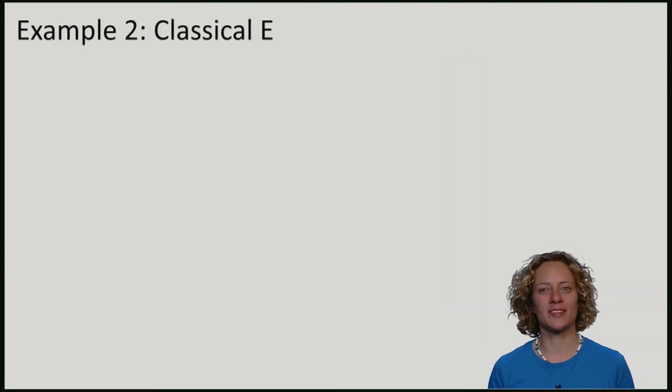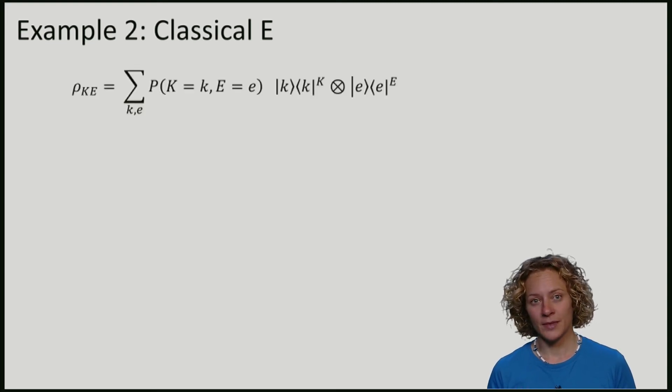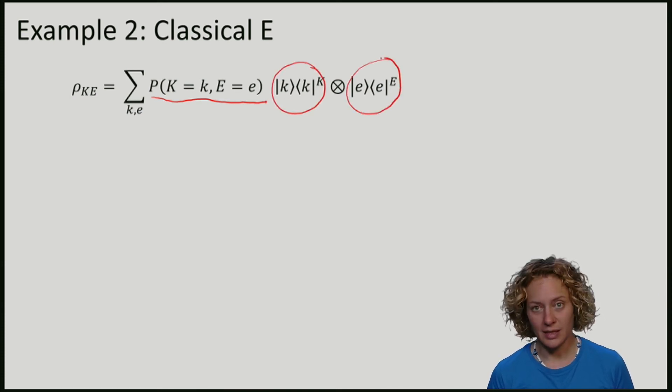Let me now consider a more general example, where I will assume that the register e that Eve holds is actually classical. What this means, if the state is classical, is that I can write it in terms of some probability distribution k e for some classical symbol k and also some classical symbol e.